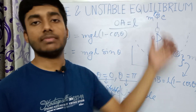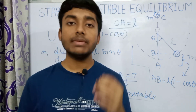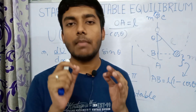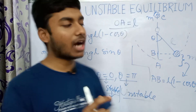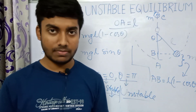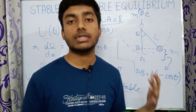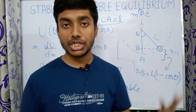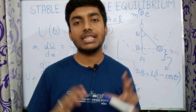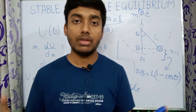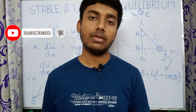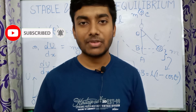The conclusion of this whole concept is that the minimum of a potential energy curve is a point of stable equilibrium, and the maximum of the potential energy curve is a point of unstable equilibrium. I think you have understood the whole concept of stable and unstable equilibrium with the help of the potential energy curve. If you found this video helpful, please like, share, and subscribe to my channel and hit the bell icon for the latest notifications. Take care of yourself. Thank you for watching.